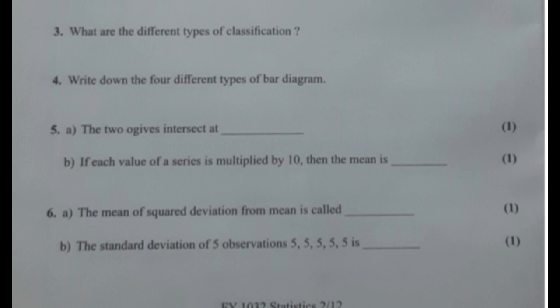Let's see how we multiply these values: 1×10, 2×10, 3×10, 4×10, 5×10. Then the values are 10, 20, 30, 40, and 50. The mean of these observations is Σx divided by n. We can calculate that the mean is 30.